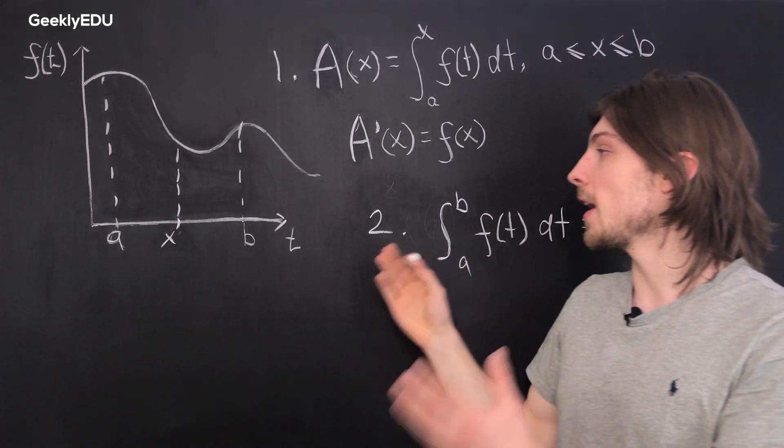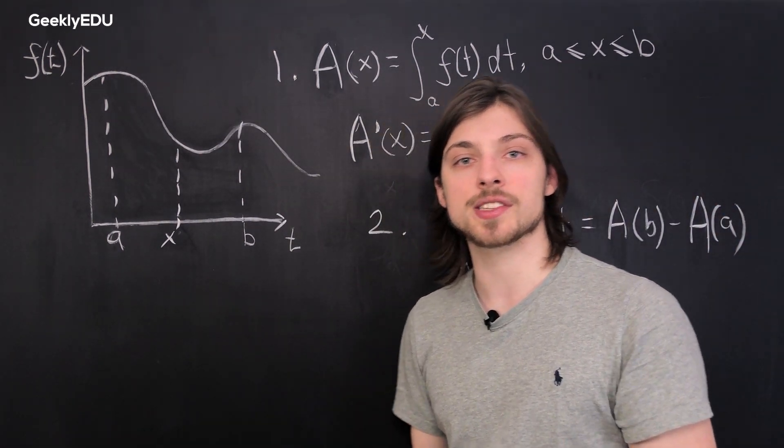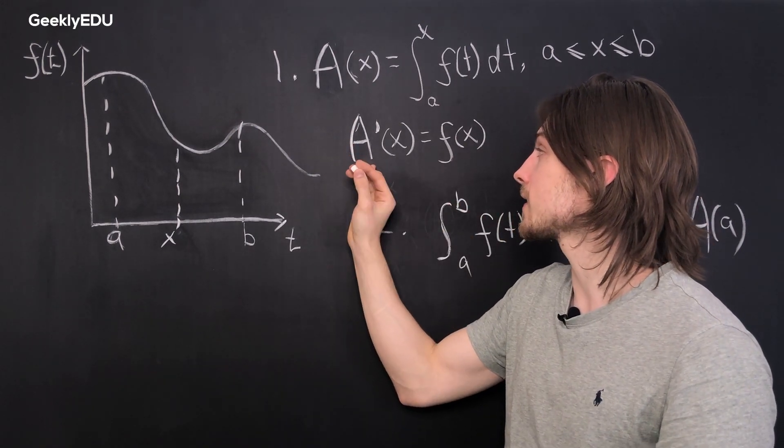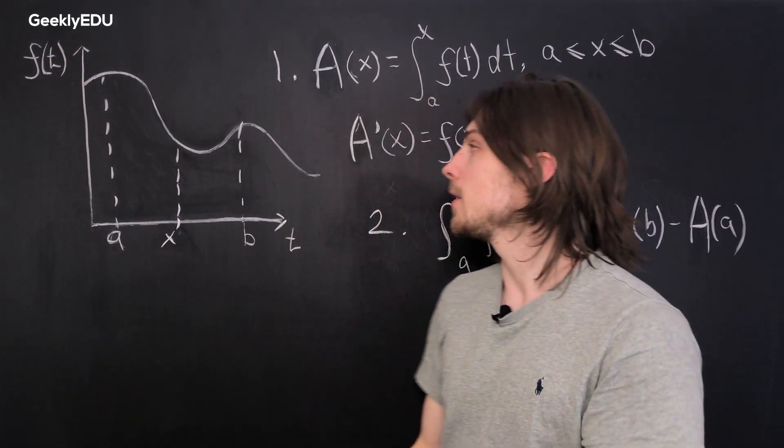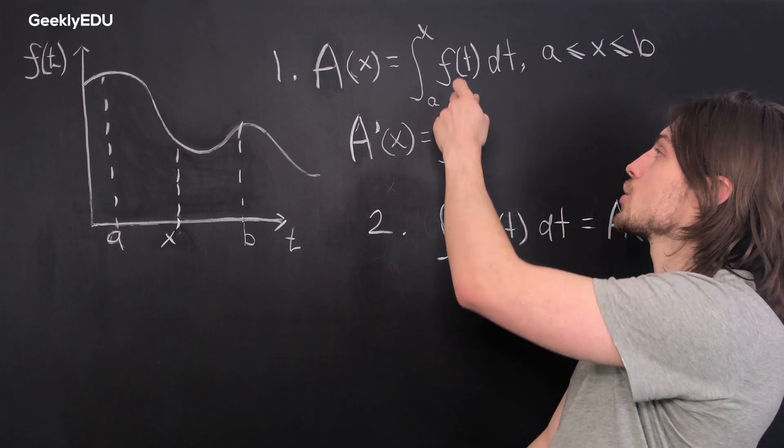So now that we've defined the function, here's something interesting. The punchline of this whole theorem is that if you take our function A of x and differentiate it, you end up with the original function f.